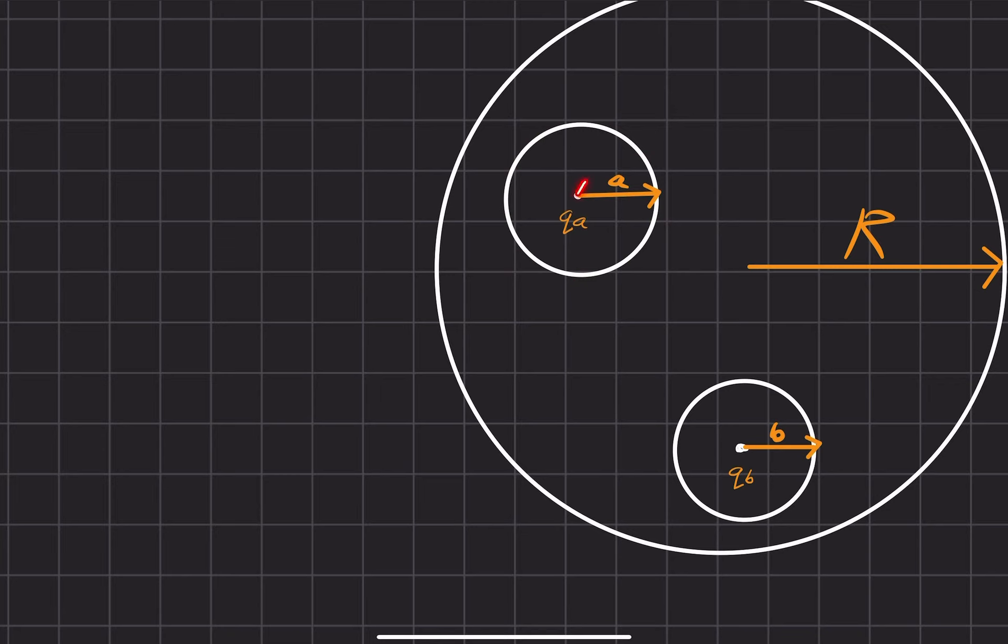And so the electric field lines are going to emanate from the QA and terminate onto the inside surface of this spherical cavity. So we know that the electric field goes radially outwards. It has a magnitude as if it was only just this QA right here.